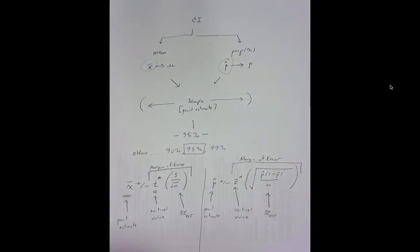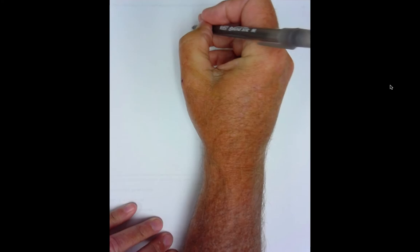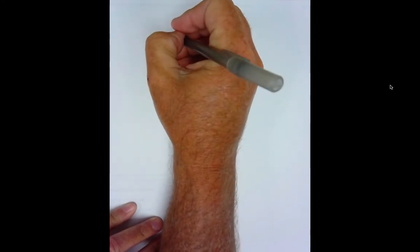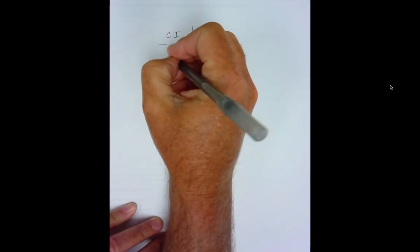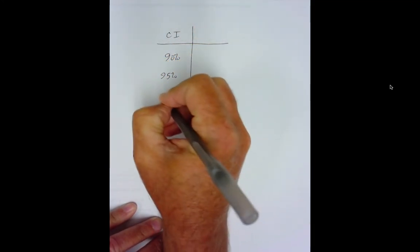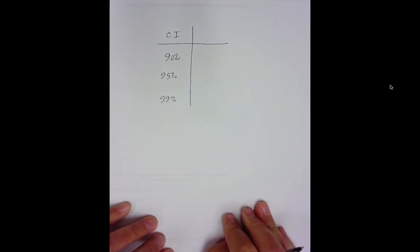Now, just for the heck of it, I told you that the confidence intervals that we typically use are either a 90%, a 95%, or a 99%.